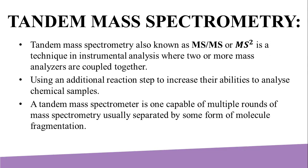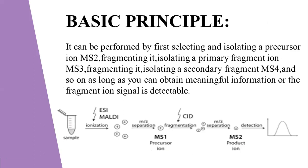An important application of tandem mass spectrometry is protein identification. Its specific principle involves first selecting and isolating a precursor ion (MS2), fragmenting it, isolating a primary fragment ion (MS3), fragmenting it again, isolating a secondary fragment (MS4), and so on, as long as meaningful information can be obtained. The sample is first ionized and changed into a precursor ion; then fragmentation and separation occur on the basis of m/z ratio, forming product ions that are detected and shown as graphs.